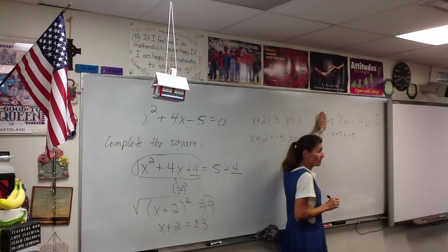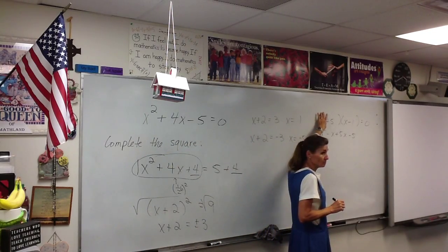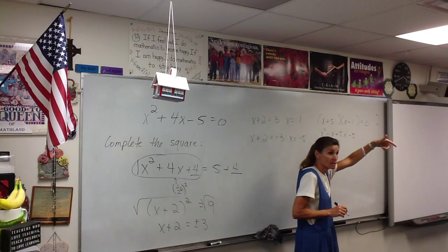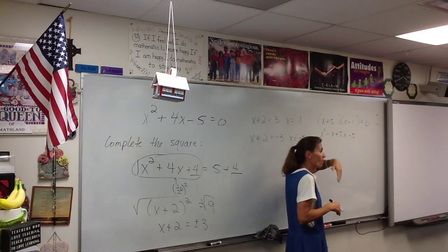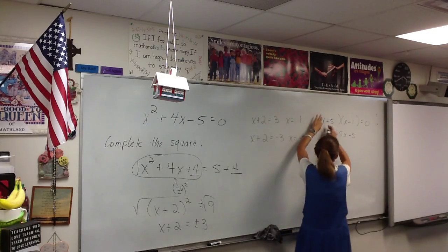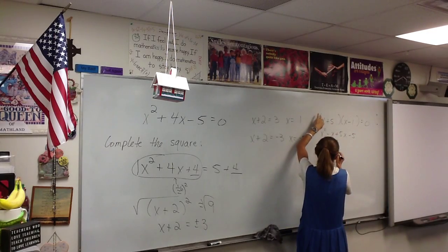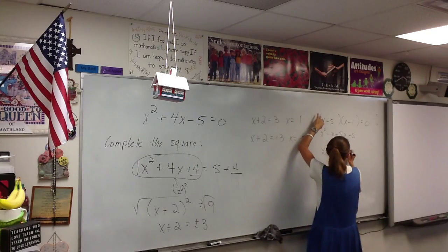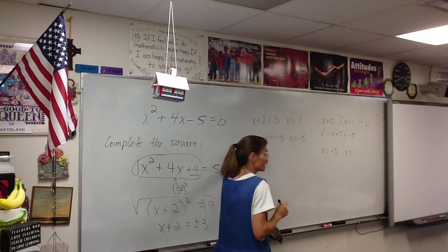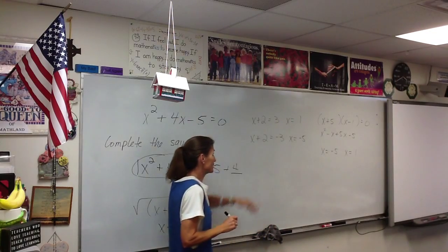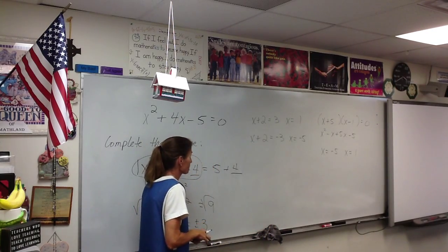Then what? Once you get it factored, what do you do? Set each one of those equal to 0. And you don't have to write that down. You can if you want, but you don't need to. You can do that in your head. You set that equal to 0. X is negative 5, or x is 1. Same answers, of course. We just did it a little bit different way.